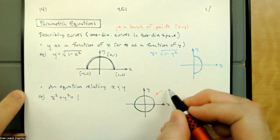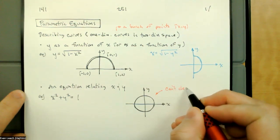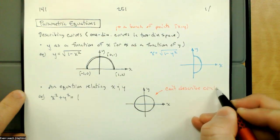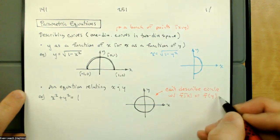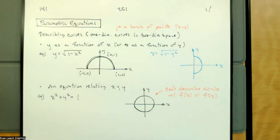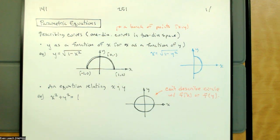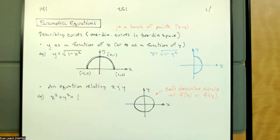We can't describe the whole circle with a function of x or a function of y - it fails the vertical line test. When x is zero, y is one and negative one. The same thing happens in the other direction: when y is zero, x is one and negative one. Some inputs correspond to more than one output.